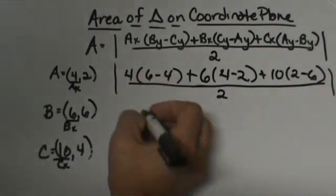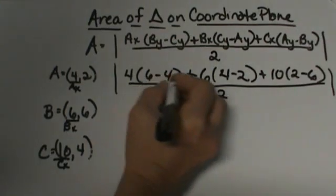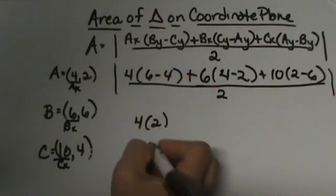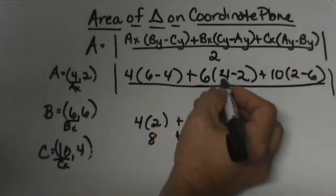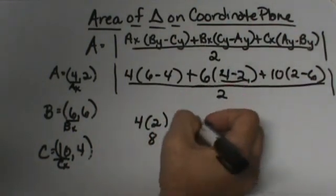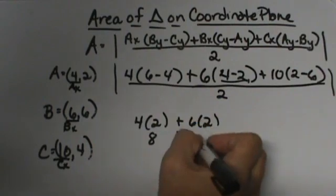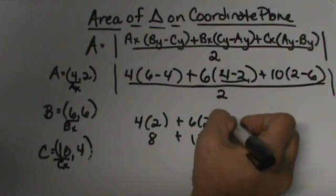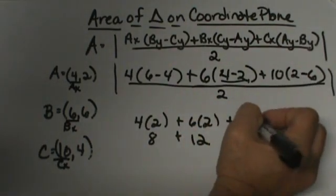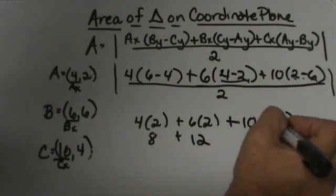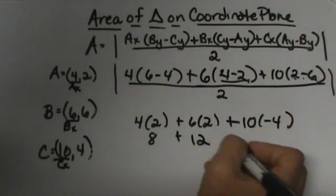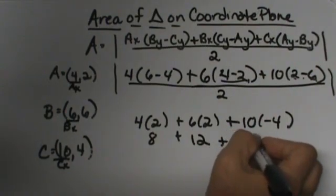4 times 6 minus 4 is 2 so I'm going to get 8 plus this is going to be 2 so 6 times 2 is 12 plus 10 times 2 minus 6 is negative 4 so I'm going to get plus a negative 40.